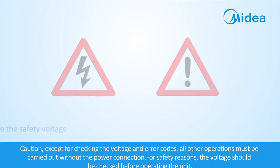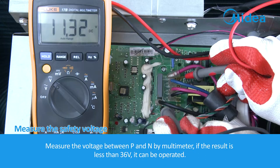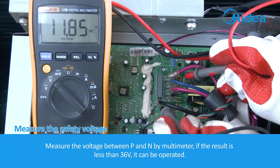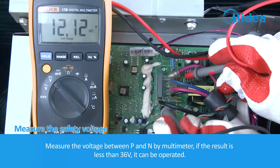Measure the safety voltage. Caution! Except for checking the voltage and error codes, all other operations must be carried out without the power connection. For safety reasons, the voltage should be checked before operating the unit. Measure the voltage between P and N by multimeter. If the result is less than 36 volts, it can be operated.